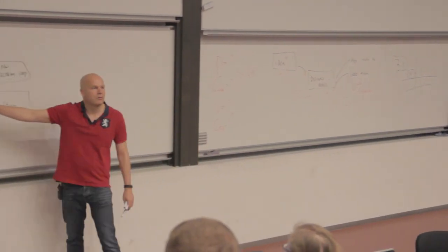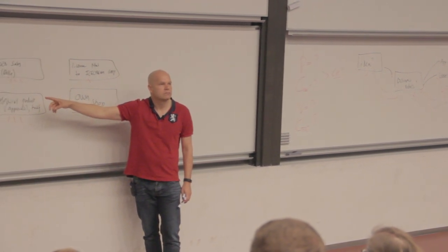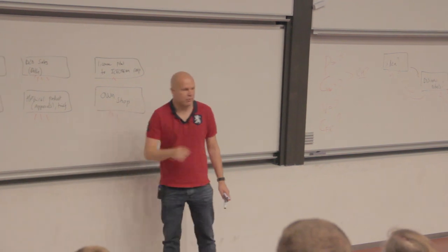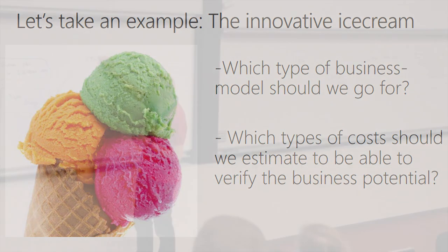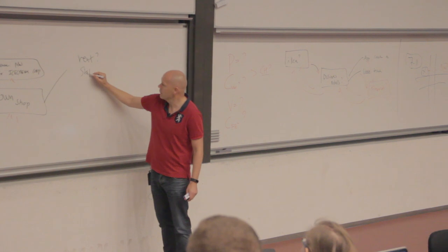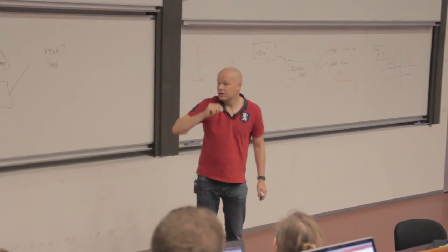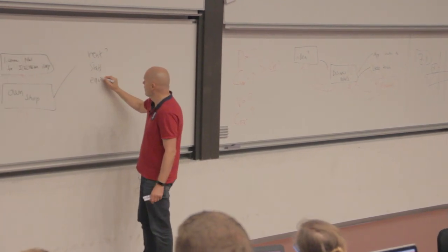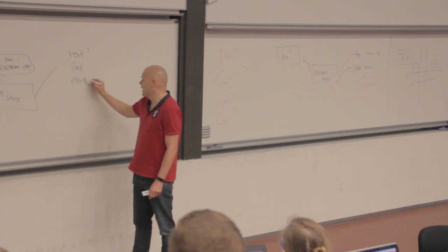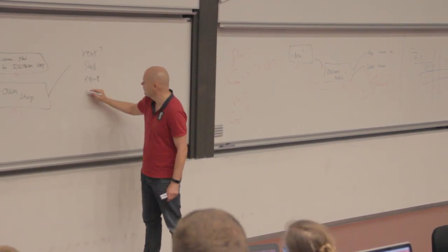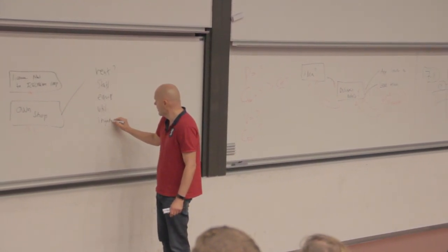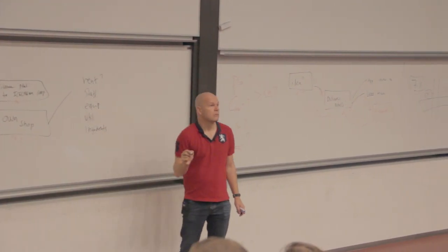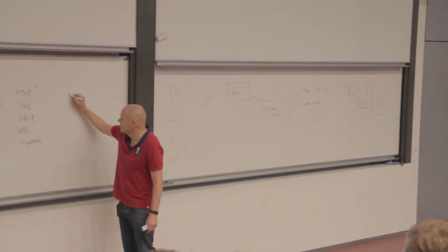Let's take one of those models — let's make an ice cream shop example. You have decided to go for this ice cream shop — what kind of cost will you have? Rent, staff, equipment, utilities like electricity, ingredients, and marketing and sales, right? This is mainly to actually operate the shop — manufacture, run it, have employees, whatever. But guess what? Then you have this shop and you need someone to get into the shop.